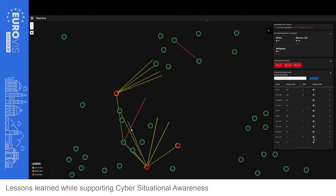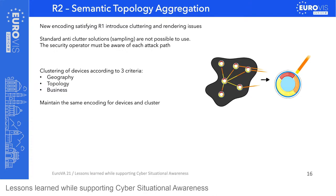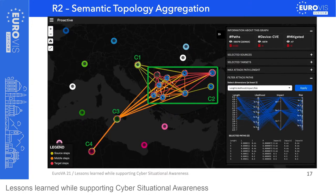The new encodings introduced cluttering and rendering issues. Standard anti-clutter solutions like sampling cannot be used since each attack path is important and the security operator must be aware of it. We decided to apply clustering on devices using geography, topology, and business information together. Clusters C1, C2, C3, and C4 group devices involved in the attack graph with the same encoding as individual nodes. A breakdown on a cluster reveals its devices while others remain at cluster level. Experts appreciated this aggregation for quickly identifying dangerous network areas to focus on first.